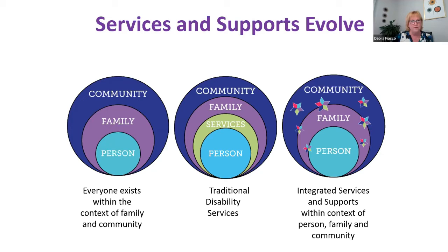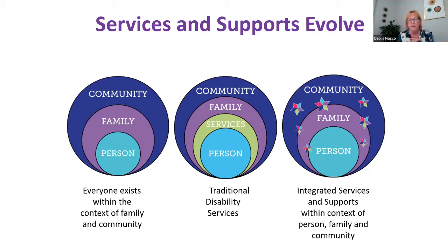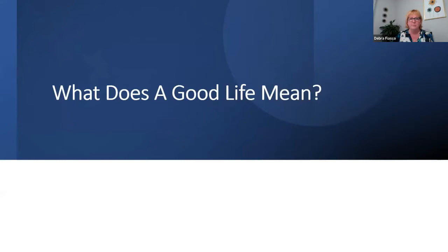Now we're going to talk about how support services have evolved. In that first graphic, we see the person surrounded by their family and community — that's what we want. But traditionally in disability and school services, we've taken that student and surrounded them with services, actually separating them from family and community. In the third graphic, that's what we really want to see — the integrated support stars are wherever they're needed, honoring the family and community with the person in the center.